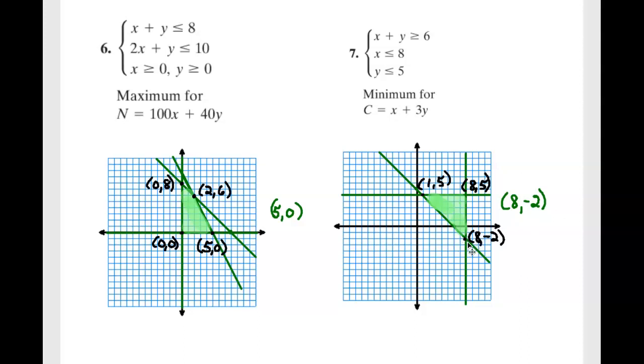So in this case it is (8,-2). So our minimum value at (8,-2) is 2.